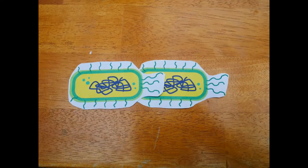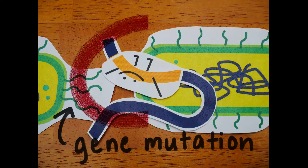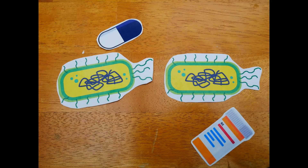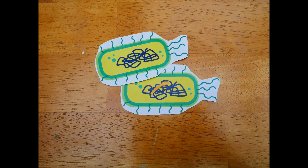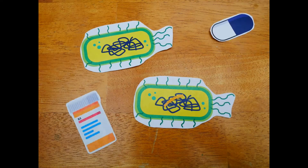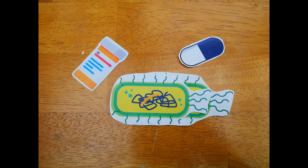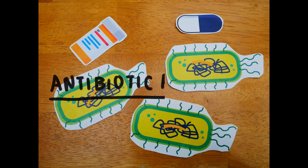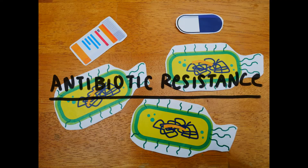There are two main mechanisms, and the first one is called gene mutations. If a bacteria acquires a mutation in its DNA that allows it to survive antibiotic treatment, then these resistant bacteria will be able to survive into the next round, which leads to antibiotic resistance.